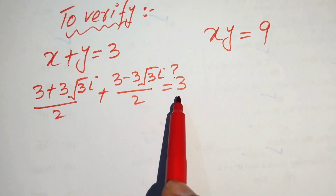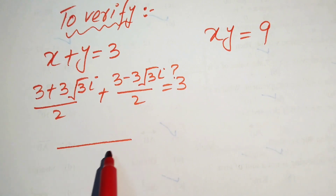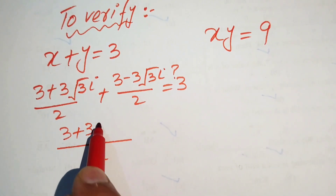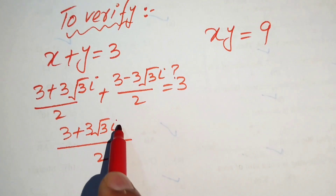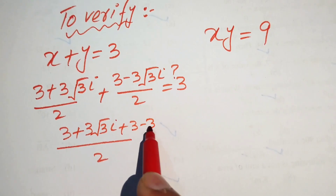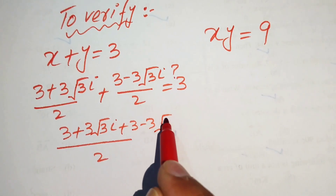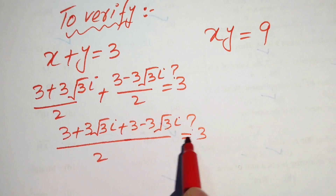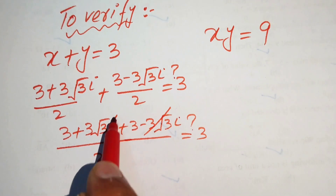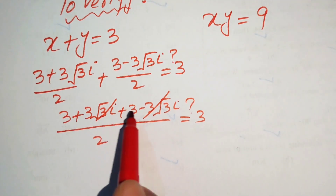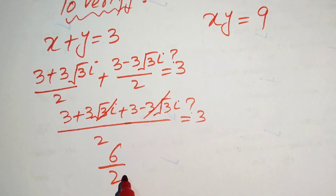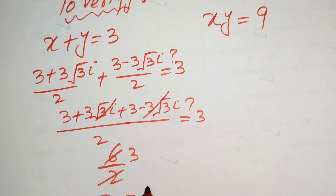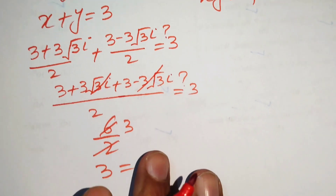We check whether this equals 3. Taking LCM, we get (3 plus 3 root 3 iota plus 3 minus 3 root 3 iota) divided by 2. The iota terms cancel, leaving 6 divided by 2 equals 3. So 3 equals 3, confirming the first equation is satisfied.